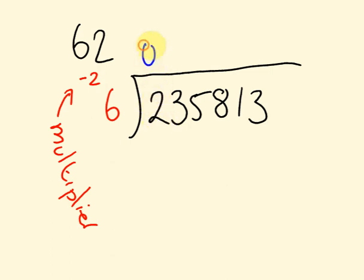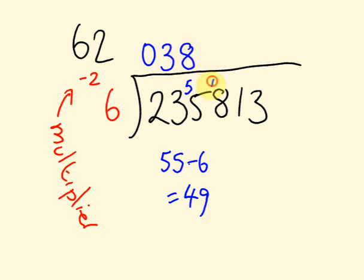Let's start working this out. 6 goes into 2. Well, it doesn't go into 2. 6 goes into 23, 3 times. And it has a leftover of 5. It has a 5 remainder. So we're going to get 55 here. And what we're going to do is 3 times minus 2 is minus 6. So 55 minus 6 equals 49. So 49 divided by 6 equals 8 with a remainder of 1.